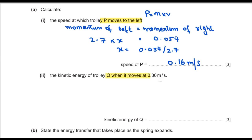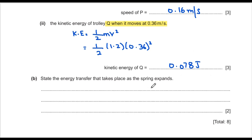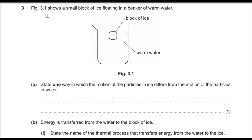The second part asks for the kinetic energy of trolley Q moving at 0.36 m/s. KE = ½mv² = ½ × 1.2 × (0.36)² = 0.078 joules. Part B says state the energy transfer as the spring expands: elastic potential energy stored in the spring is converted into kinetic energy of the trolleys.